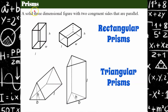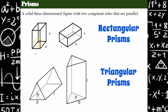To review what a prism is: a prism is a solid three-dimensional figure with two congruent sides that are parallel. A solid is just three-dimensional — it could be a can of vegetables, a box of cereal, or a piece of fruit. Those are solids with three dimensions: length, width, and height. This is a rectangular prism because the two parallel bases are rectangles, and on a rectangular prism, no matter which two opposite faces you pick, they're parallel and the same.